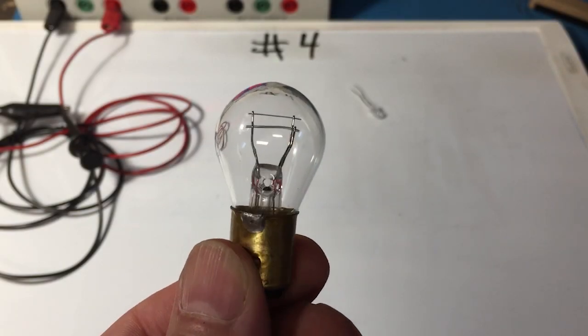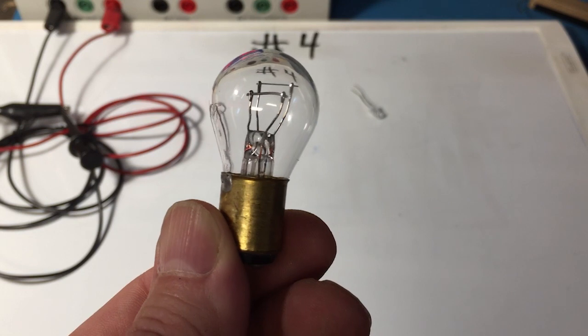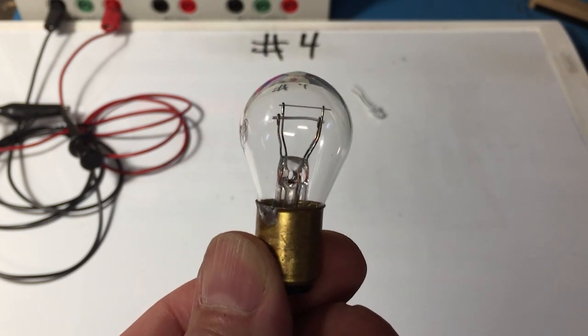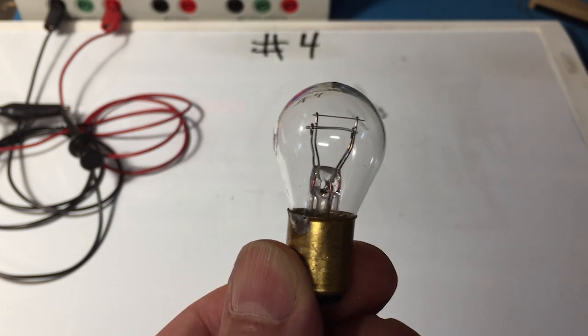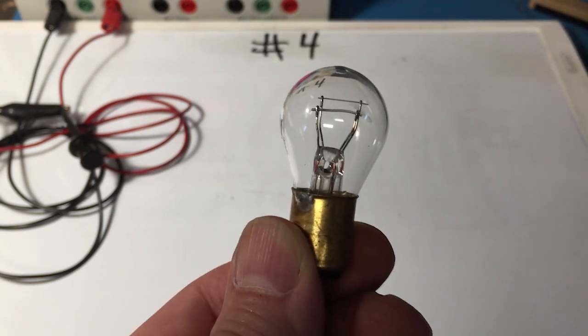This device is an old-school tail light from a car. It's a light bulb that goes in the tail light of most cars, probably made from the 1950s up until maybe two or three years ago, and even some now.